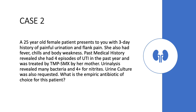Now let's answer Case 2. A 25-year-old female patient presents with a three-day history of painful urination and flank pain, with fever, chills, and body weakness. Past medical history revealed four episodes of UTI in the past year, treated with TMP-SMX. Urinalysis revealed many bacteria and 4-plus for nitrates, and urine culture was requested. As the clinician, what is the empiric antibiotic choice? The answer is: shift to fluoroquinolones and use ciprofloxacin given twice a day for seven days. You should instruct the patient to watch out for side effects and to repeat the urinalysis after seven days.